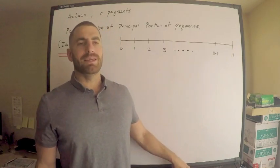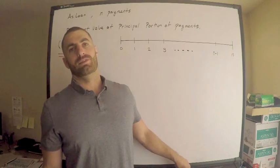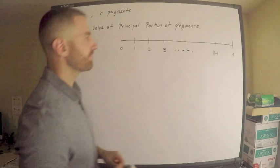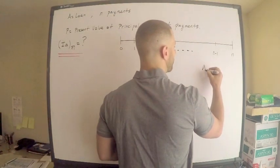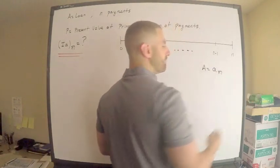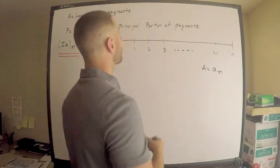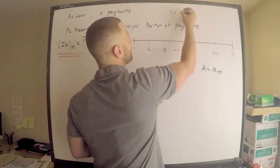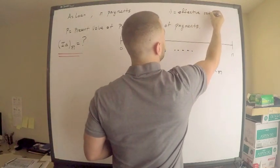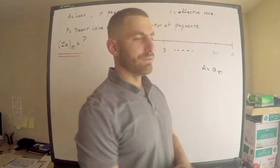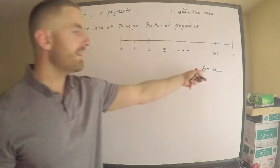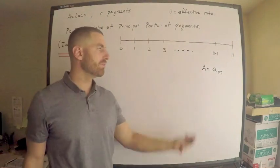Each payment I'm making is one, so I'm only paying back one each time, which means the loan amount a is equal to a-angle-n. I'll omit the interest rate i for convenience. The effective rate of interest gives me my loan amount — payments are one, no big deal.